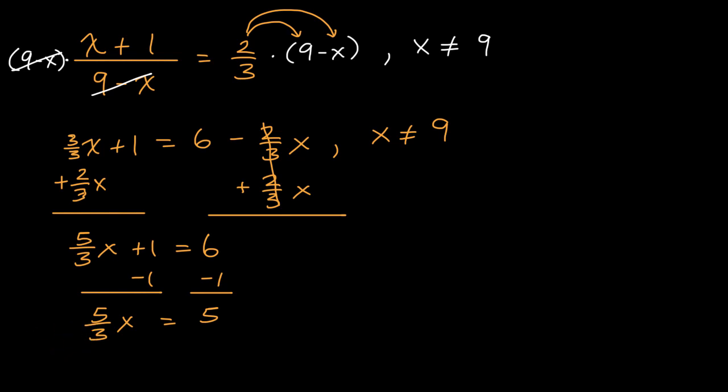And then last but not least, we can multiply both sides of this equation times the reciprocal of five-thirds, which is of course three-fifths. And I'm doing that so I just have an x isolated on the left-hand side. Times three-fifths. And we are left with three-fifths times five-thirds is of course equal to one. So we're left with x is equal to five times three-fifths is three.